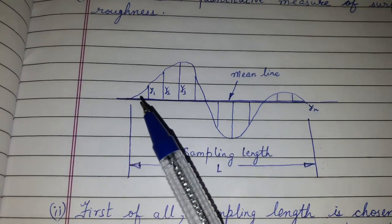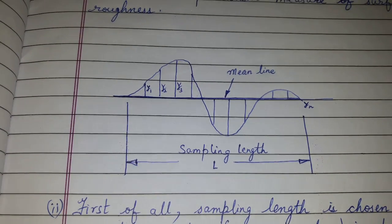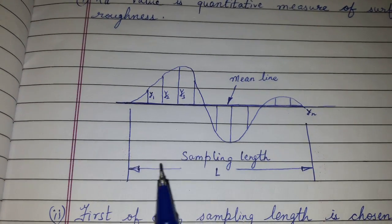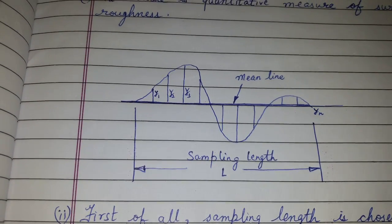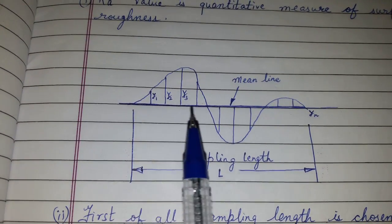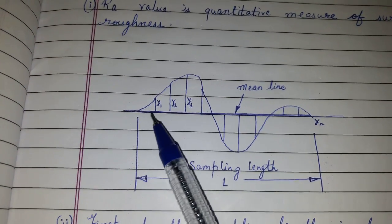This is an enlarged view of a surface. So what is done? A sampling length is decided for measuring the Ra value. Then the reference line or the mean line is drawn such that it divides the complete profile into two equal areas above and below.